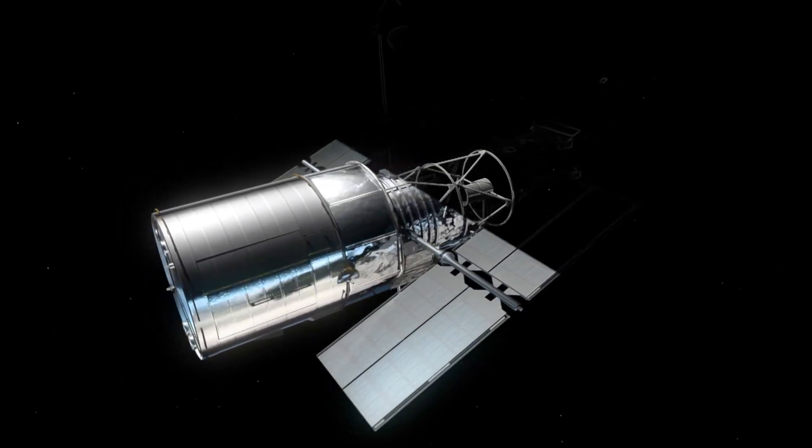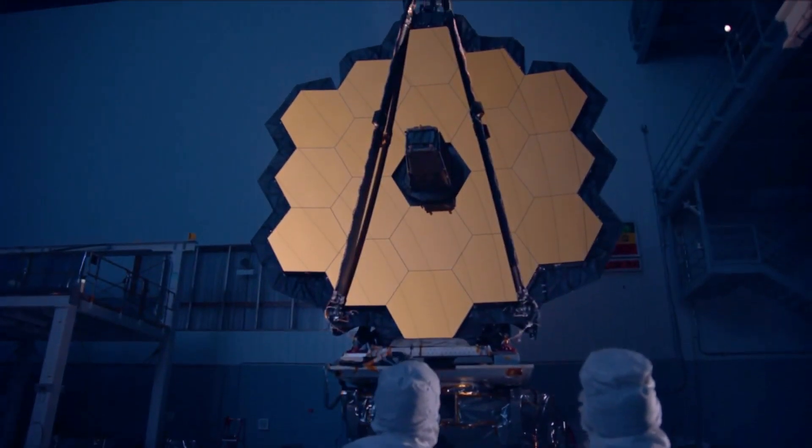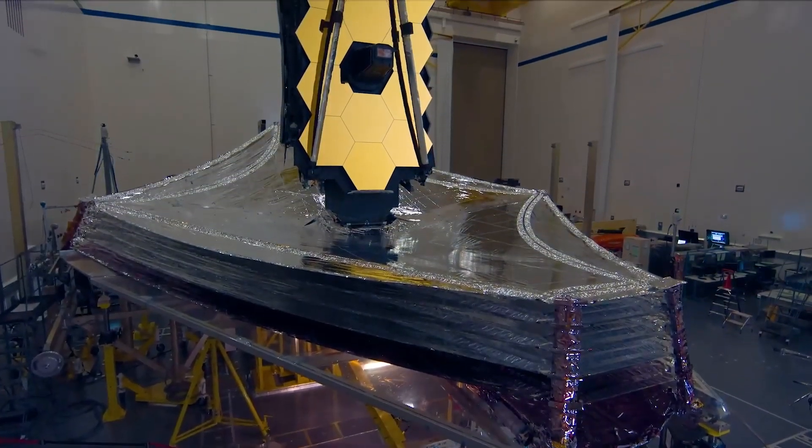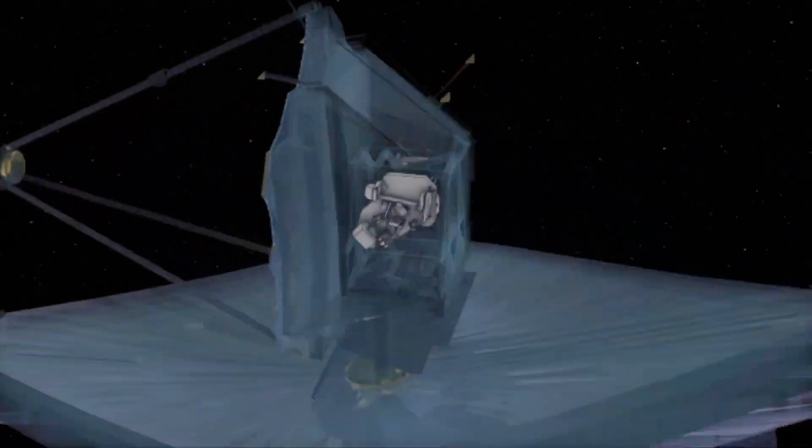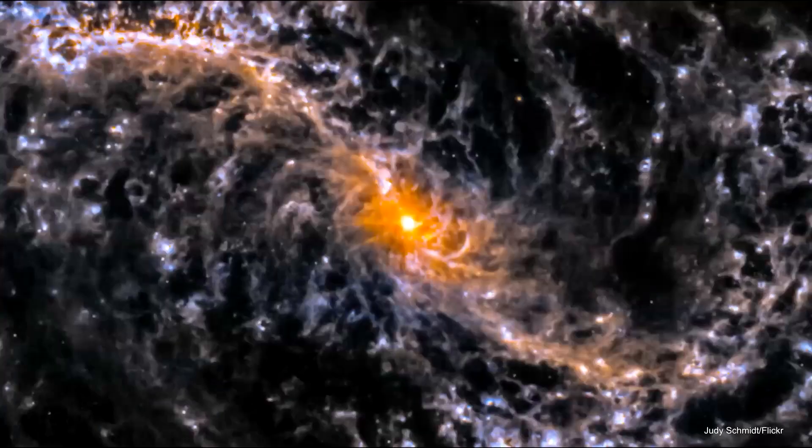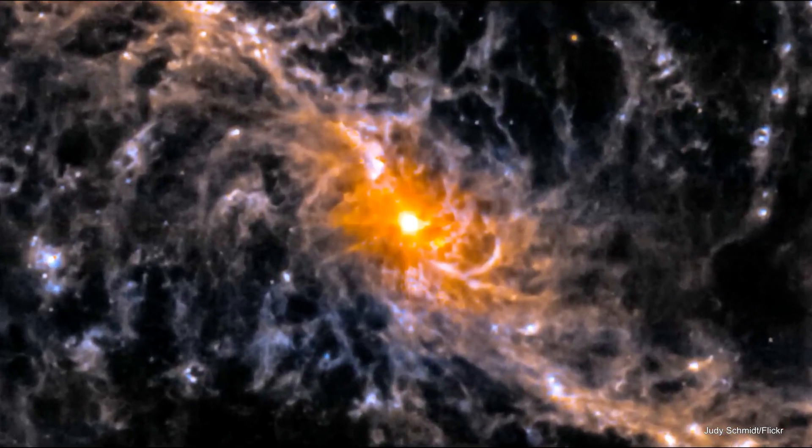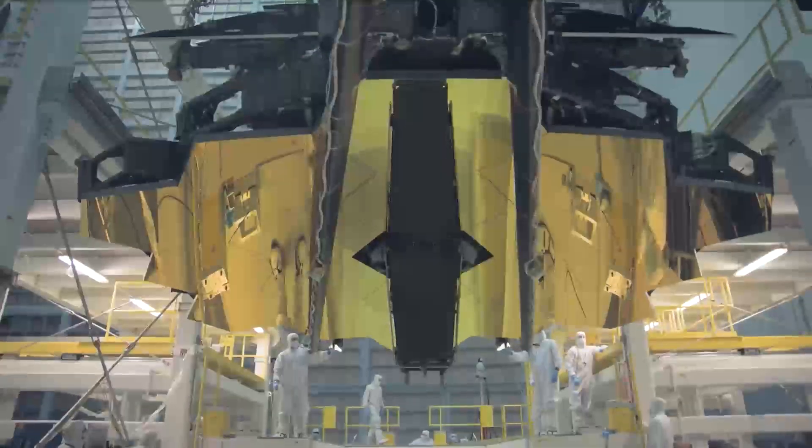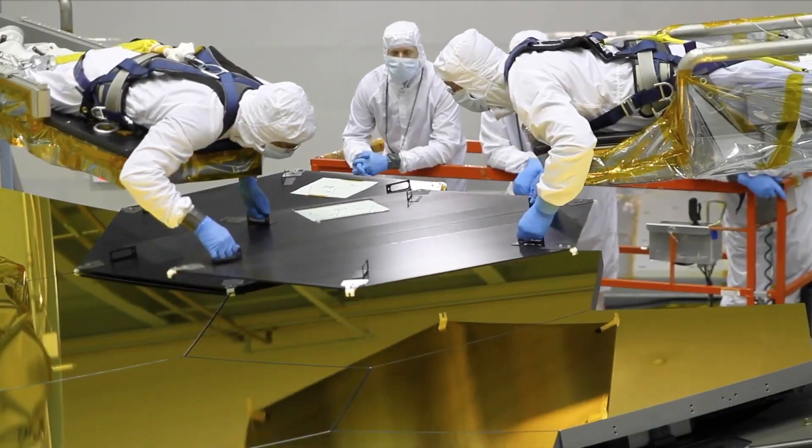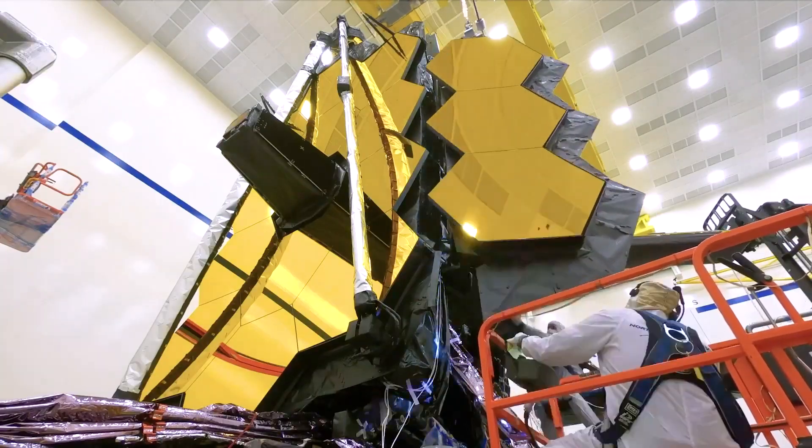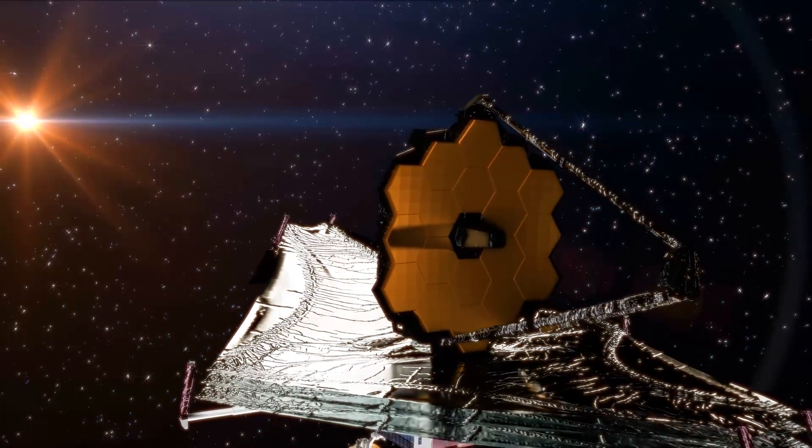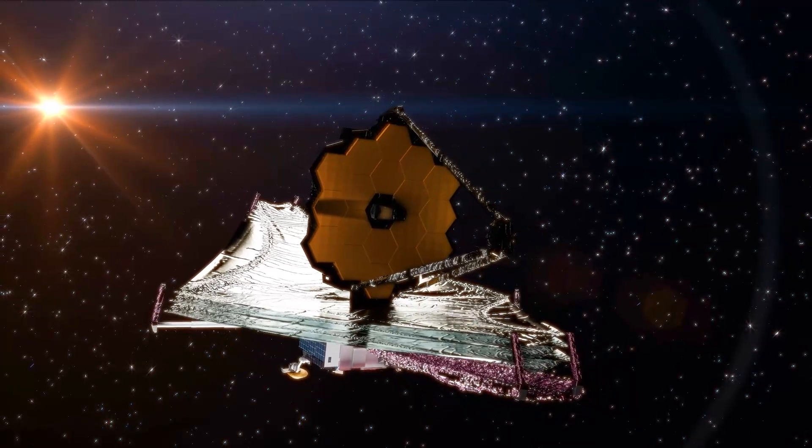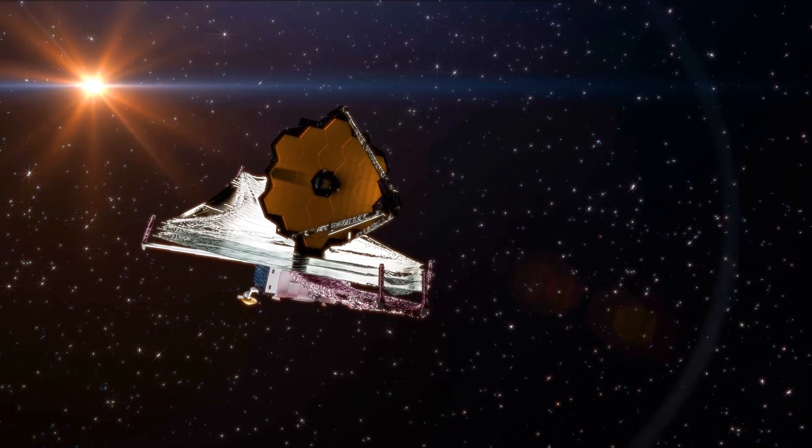As the successor to the Hubble Space Telescope, James Webb was designed to be humanity's most advanced observatory, equipped with highly sensitive instruments to study distant celestial objects with unparalleled precision. Following years of meticulous planning, engineering, and anticipation, the telescope finally embarked on its groundbreaking journey, soaring through space to explore the cosmos like never before.